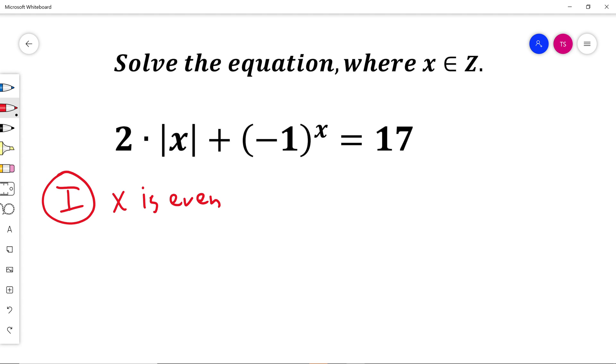When x is even, this equation will become 2 times absolute value of x. That moment minus 1 to the power of x, x is even, no matter positive or negative even number. This will become positive 1.